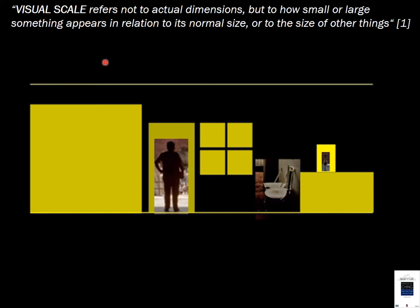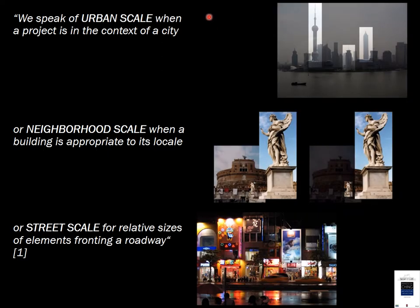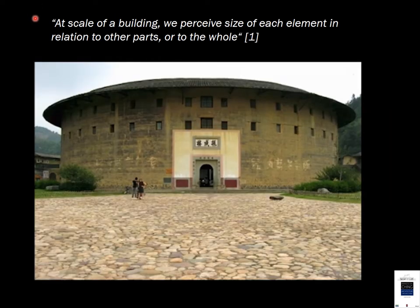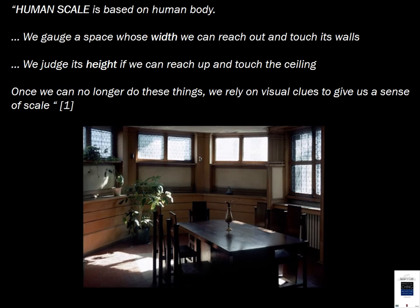Visual scale refers not to actual dimensions, but to how small or large something appears in relation to its normal size or to the size of other things. We speak of urban scale when a project is in the context of the city, neighborhood scale when a building is appropriate to its locale, or street scale for relative sizes of elements fronting a roadway. At the scale of a building, we perceive the size of each element in relation to other parts or to the whole.